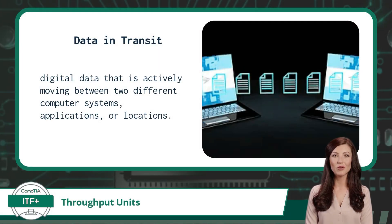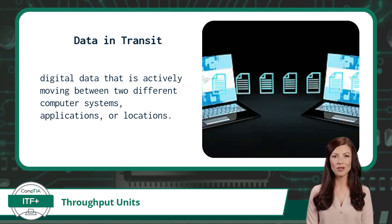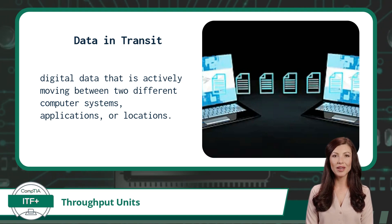Throughput units are used for data in transit. Data in transit refers to digital data that is actively moving between two different computer systems, applications, or locations.